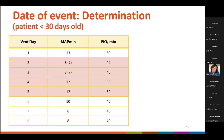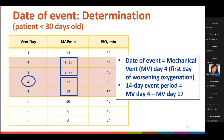In this example of a patient less than 30 days of age, looking at the MAP parameter, a baseline period of stability is defined on vent days two and three. Vent day four is the first day of the period of worsening oxygenation that meets parameters. So vent day four is the PVAE date of event, and the 14-day event period in this case would be mechanical ventilation day four through mechanical ventilation day 17.